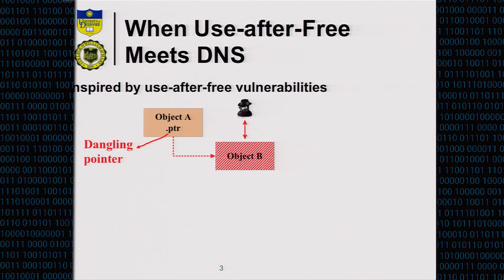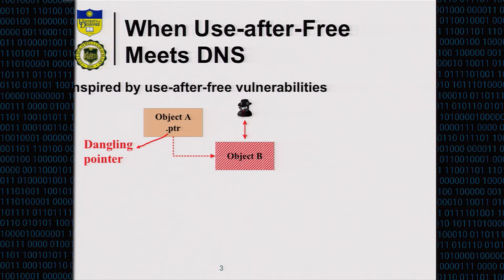This study is inspired by the system security problem called 'use after free.' In your program, you have a pointer to a piece of memory. What happens if you free that memory but still keep using the pointer? If somebody else uses that memory again, the content will change. Benignly, your program will crash. But if someone is malicious, they can change the value and hijack your program. A similar situation applies to DNS records.